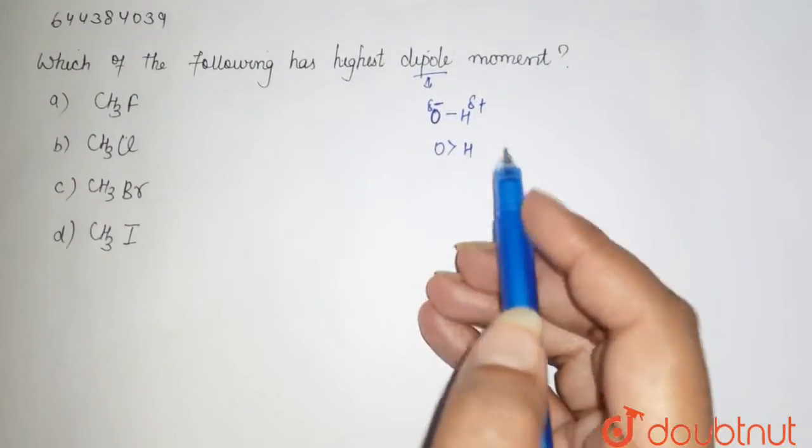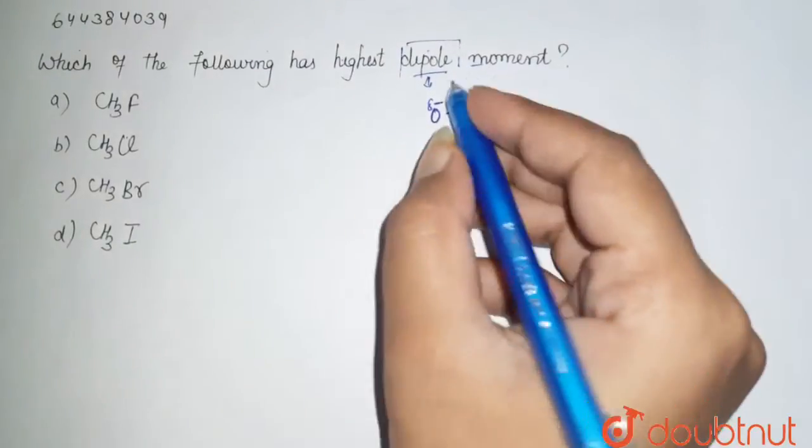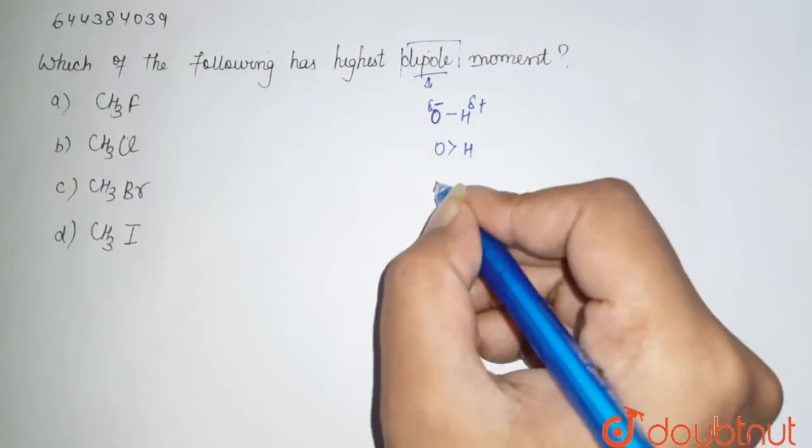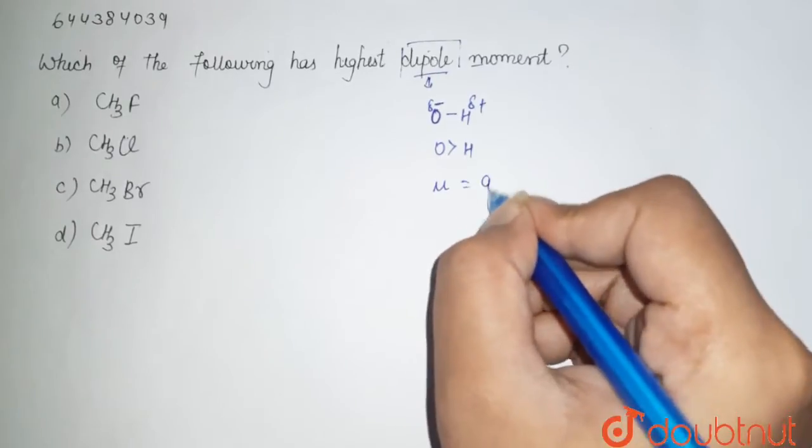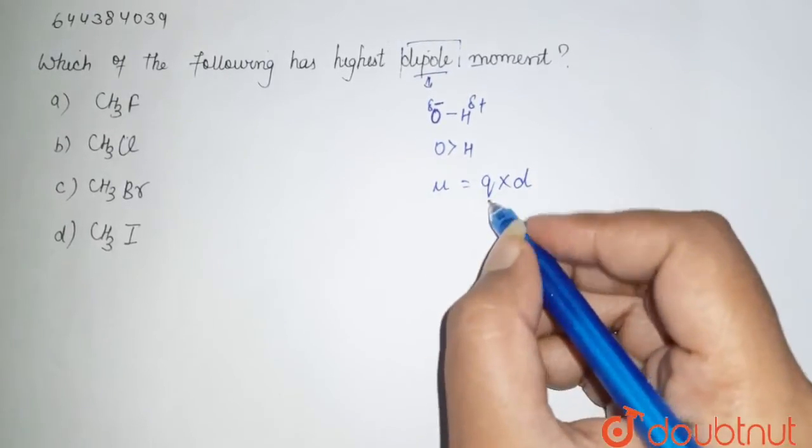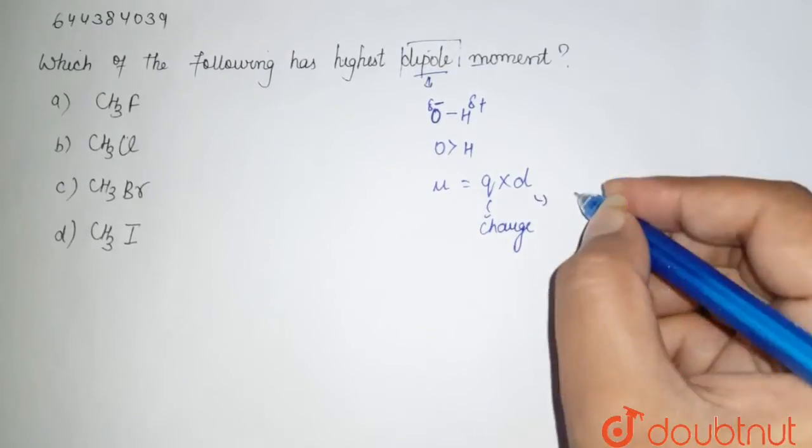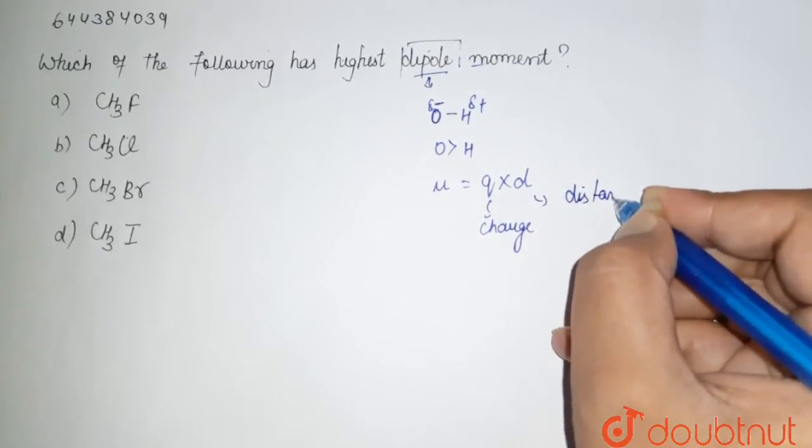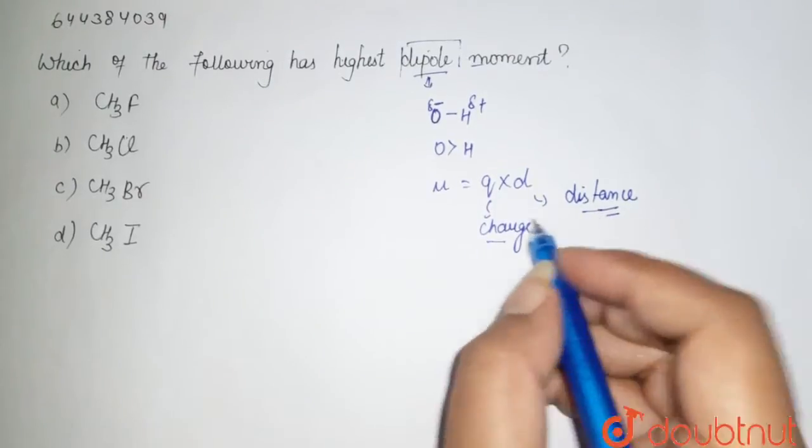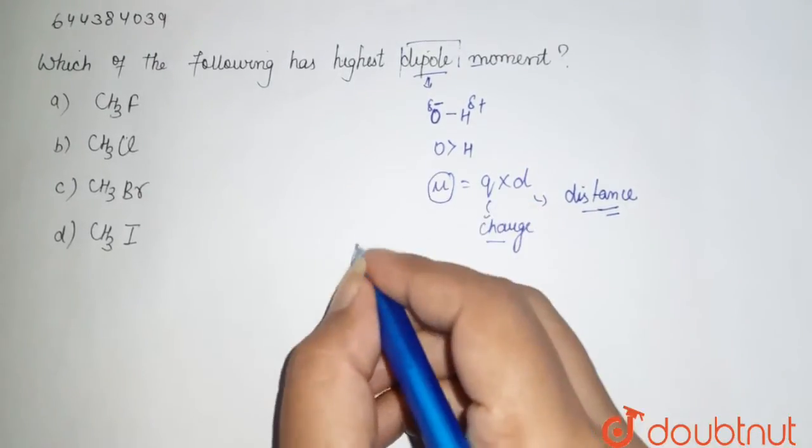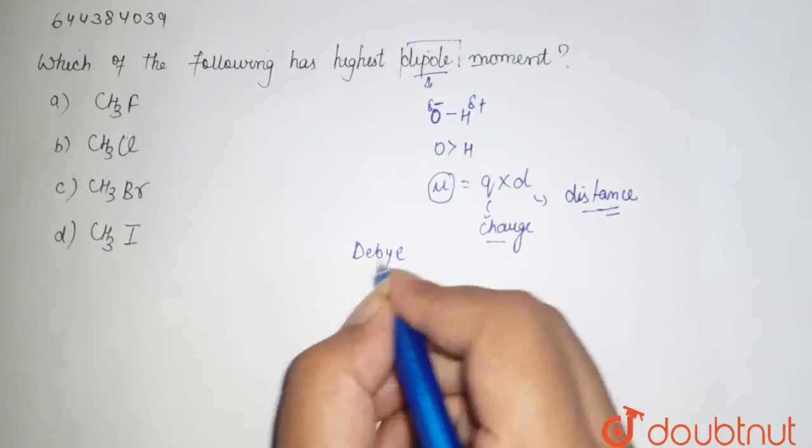So this distribution of charge here, that is the creation of your dipole, and the value which we calculate is mu, which is equal to q into d. That is q is the charge, d is the distance. So it depends upon charge and distance. It is denoted by mu and its SI unit is Debye.